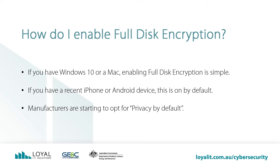How do I enable full disk encryption? If you have Windows 10 or a Mac, enabling full disk encryption is simple. If you have a recent iPhone or Android device, this is on by default. Manufacturers are starting to opt for privacy by default. In the past, encryption was clunky and often caused a performance decrease, which is why it was not enabled by default. These days the encryption technology is much better. Coupled with more powerful processors, encryption does not have the performance hit it once did.